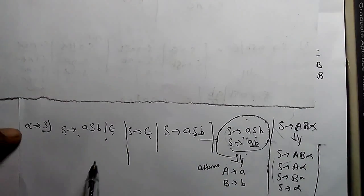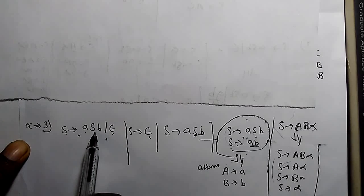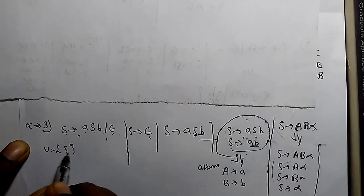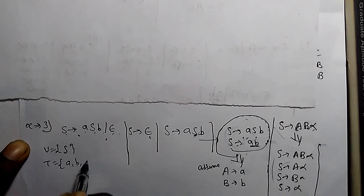Let's take another example. There is a question: S derives small a capital SB and epsilon. So variables are capital S, and terminals are small a, small b, and epsilon.